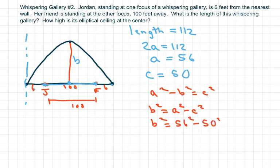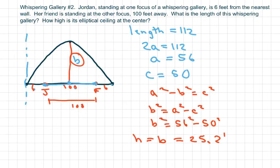So we use the calculator - you're going to get the ceiling is going to be 25.2 feet high. So that's your b, and it's actually also your height to the ceiling.